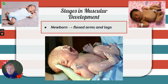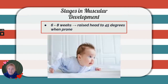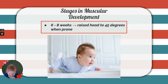So some general stages in muscular development. Newborns often have this flexed arms and legs position — remember they were just in the uterus, in the amniotic sac, sort of squashed up, so they're often in this position. Around six to eight weeks, babies are able to raise their head to about a 45-degree angle when they're prone. Remember, prone means lying face down — stomach on the floor.